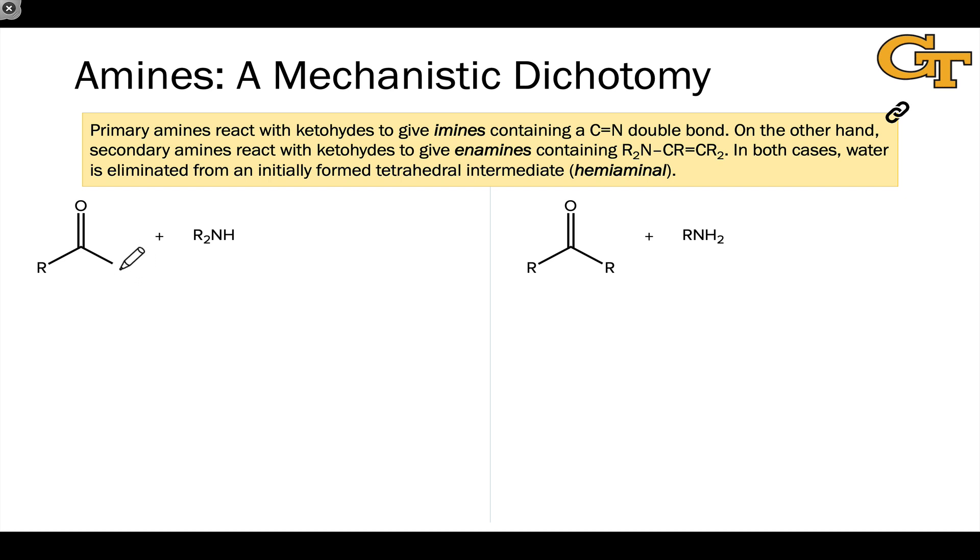Another interesting thing about amines is that we have an interesting mechanistic dichotomy that occurs depending on the substitution pattern of the amines. We're going to look at two cases: a secondary amine with two R groups linked to the nitrogen and a primary amine in which only one R group is linked to the nitrogen. I want to start with the primary amine case on the right because it's more straightforward to understand from a reactivity perspective.